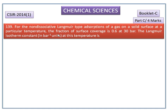For the non-dissociative Langmuir type adsorption of a gas on a solid surface at a particular temperature, the fraction of surface coverage is 0.6 at 30 bar. Find the Langmuir isotherm constant at this temperature.